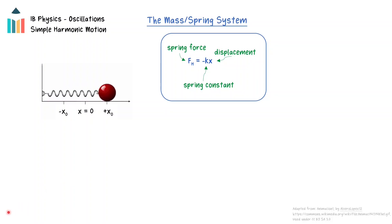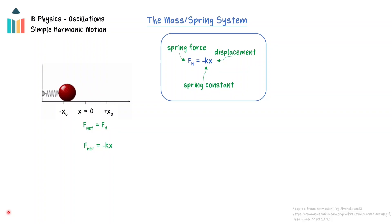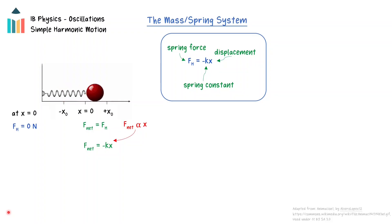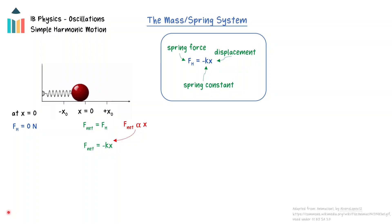Displacing the mass on a spring from the equilibrium position to a maximum displacement x0 will increase the spring force acting on the mass, creating a net force acting on the mass when the mass is released. Because Hooke's law states that the magnitude of the spring force is directly proportional to the displacement, the net force will be directly proportional to the displacement of the mass, demonstrating the first condition for simple harmonic motion. At the equilibrium position, the net force is equal to zero, but as the displacement increases, the spring force increases linearly, causing the net force to increase linearly. At the maximum displacement, the net force will be a maximum. Because of Newton's second law, the same conditions will apply to the acceleration of the mass.